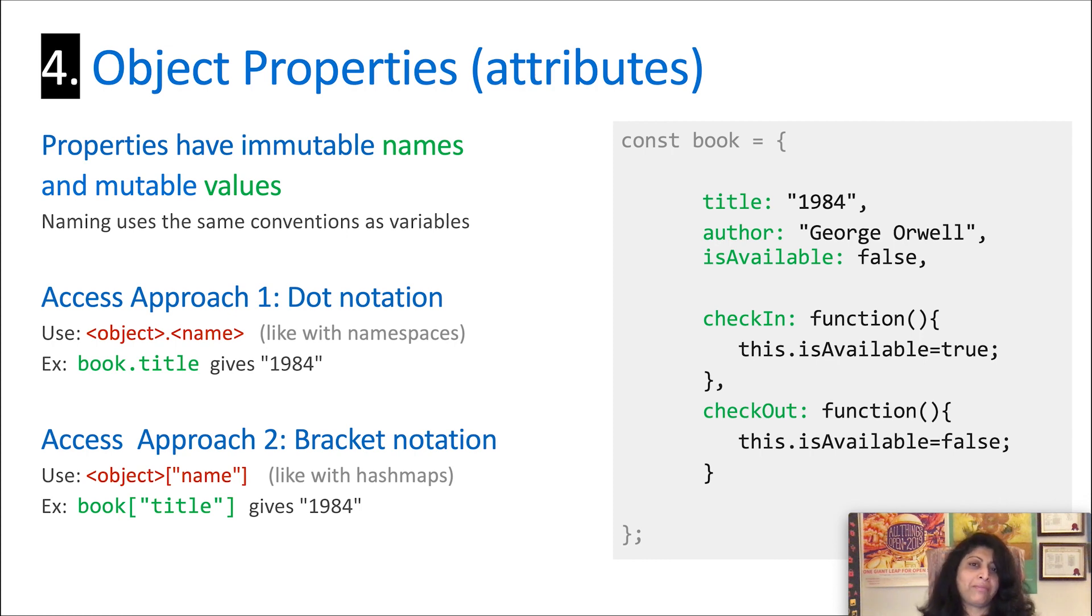The second notation, which sometimes is harder for people to wrap their heads around, is known as the bracket notation. And it's easier to remember if you think of the fact that properties are effectively like hash maps, they're a key and a value. So with the bracket notation using object name brackets property name as the key, which in turn will go and fetch back the value. So in this case, I can say book square brackets title and note that the title is in quotes will now return to you 1984. Make sense? Hopefully.